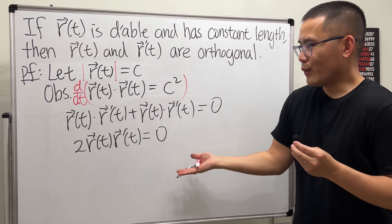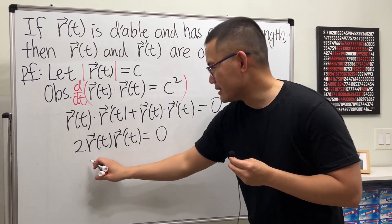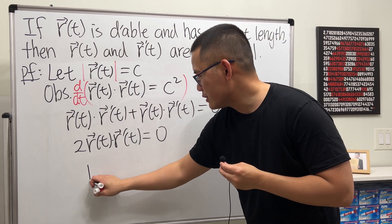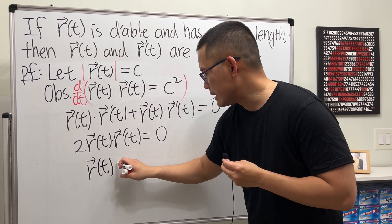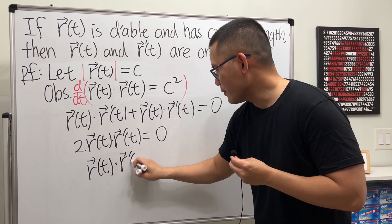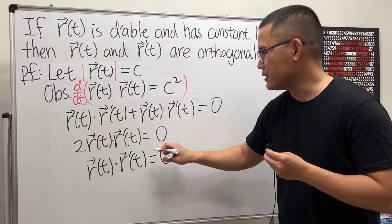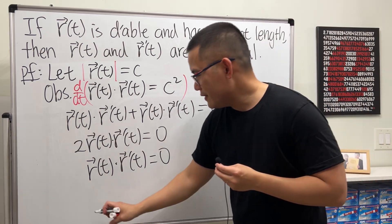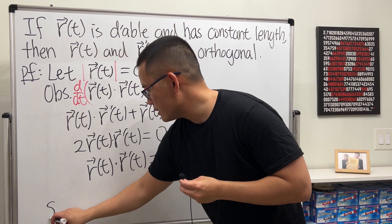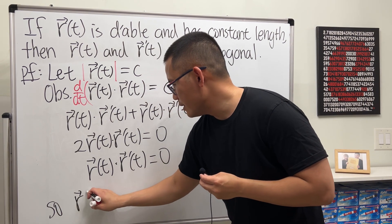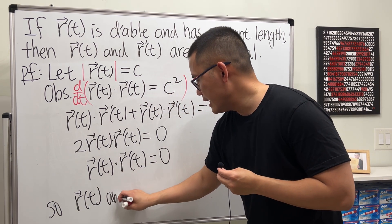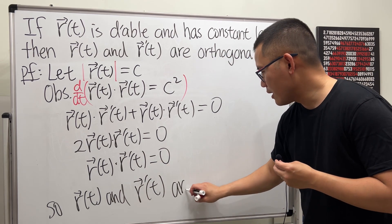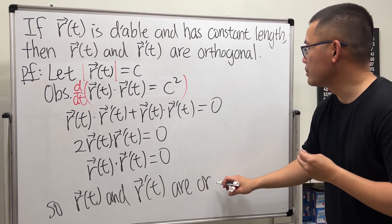Dividing both sides by two, we see that r(t)·r'(t) = 0. The dot product of r and r' equals zero, therefore r(t) and its derivative r'(t) are orthogonal.